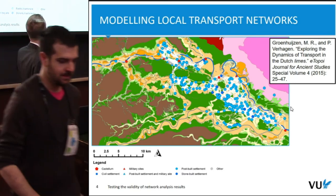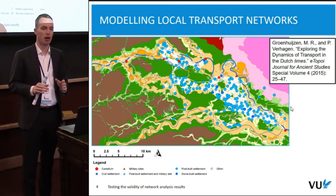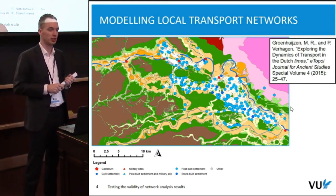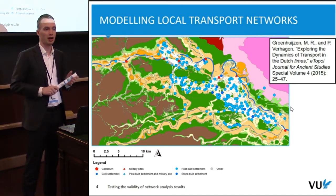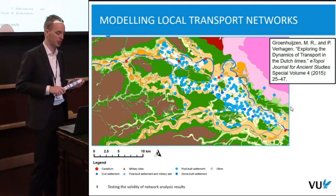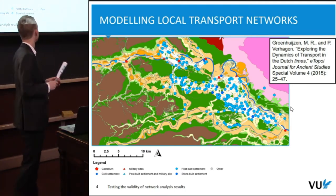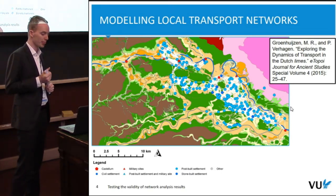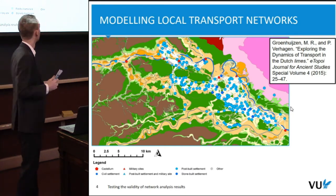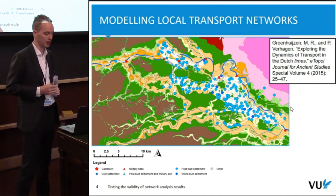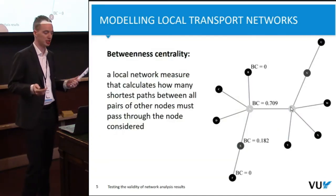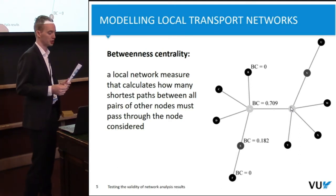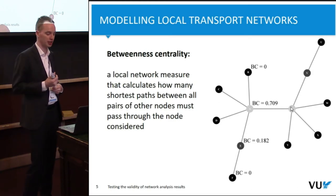The dataset includes a number of sites, mostly small rural settlements, a small number of stone-built settlements indicated by dark blue, and a number of military sites mostly located along the Rhine. Least cost paths were constructed between these sites taking into account the natural environment — floodplains in green, natural levees in orange, and peatlands in brown — and this network was then transformed for network analysis. One particular measure I'll discuss is betweenness centrality, which calculates how many shortest paths between all pairs of nodes must pass through a given node.